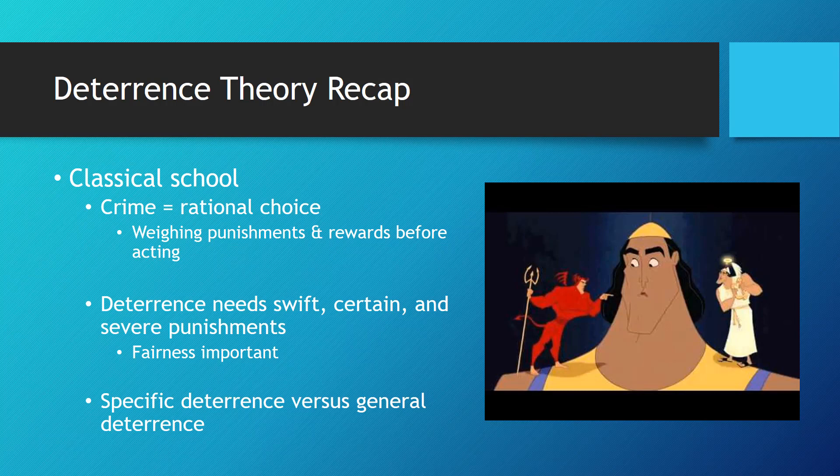Classical theorists proposed two types of deterrence: specific and general. Specific deterrence means that the individual themselves is deterred from future criminal behavior, whereas general deterrence means that other people would also be deterred based on a single person's punishment. Although modern theories have diverged from the original classical theories in some ways, the basic assumptions of deterrence-based theories still hold true in modern versions.